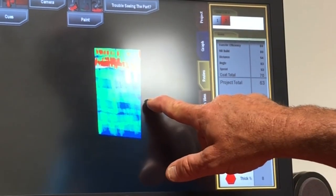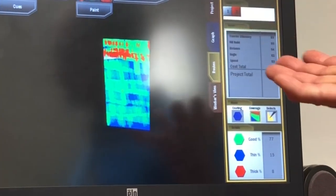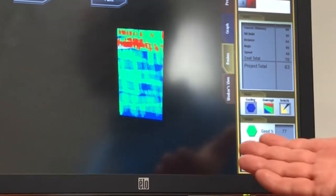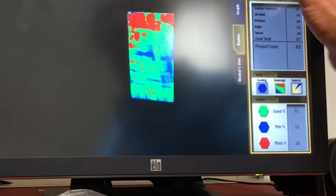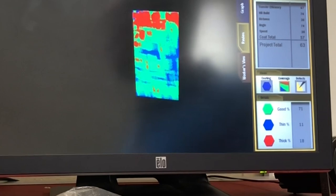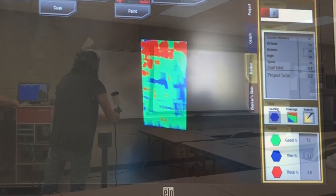The coverage shows he was closer at the top because red means too much paint. If it was green the whole way, it's perfect, and blue means not quite enough paint. Both indicators show he's a little closer at the top, putting too much paint there.